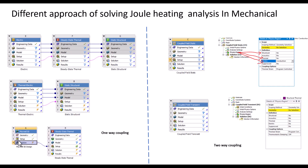Maxwell is a dedicated solver in ANSYS for solving complex industrial-level electrical components. If you are solving a problem using Maxwell 3D, you can transfer the Joule heat calculated in Maxwell to a steady-state thermal, which then predicts the temperature developed in the product. Finally, you can transfer that to a static structural or transient structural to predict the structural response.